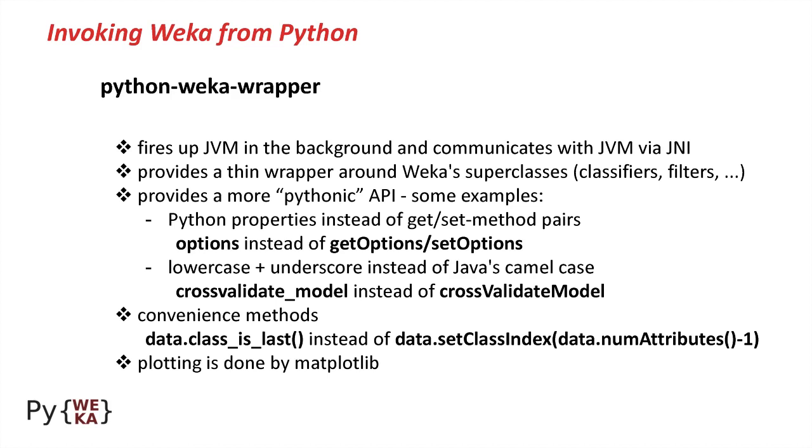Here are some examples. Python properties are used instead of the Java get/set method pairs. For example, options instead of get_options, set_options. It uses lowercase plus underscore instead of Java's camel case. So, cross_validate_model instead of crossValidateModel. It also has some convenience methods that Weka doesn't have. For example, data.class_last instead of data.setClassIndex(data.numAttributes() - 1). And plotting is done via matplotlib.